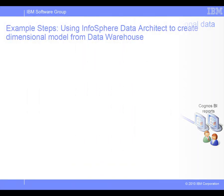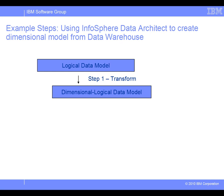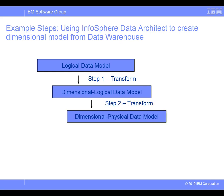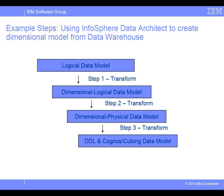We'll see Tom do this in three steps using Infosphere Data Architect. First, he will create a dimensional logical data model from an existing logical data model that represents a subset of the data warehouse. Then, he will transform the dimensional logical data model into a dimensional physical data model. Finally, he will generate the DDL to deploy the data mart, and then transform the model to a Cognos and Cubing Services data model for analytical queries and report generation.